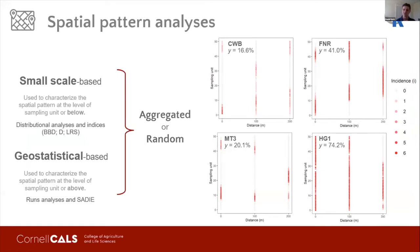On these maps, the darker the red color on each sampling unit, the larger the number of diseased leaves. But only looking at these maps, we cannot reach any conclusion about the distribution of the disease in these fields.